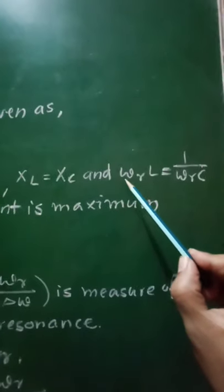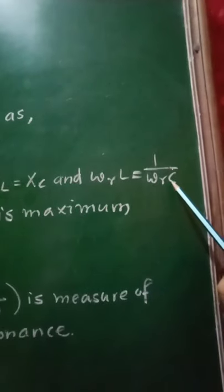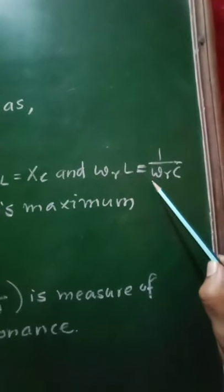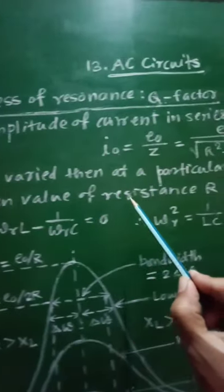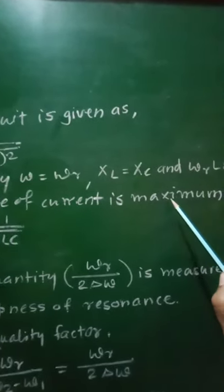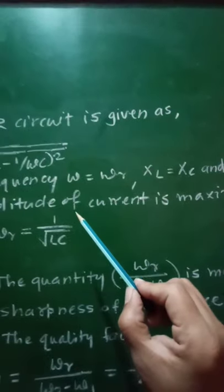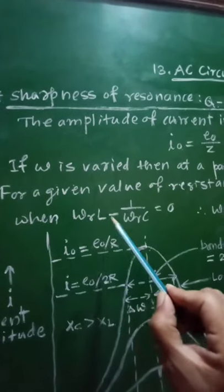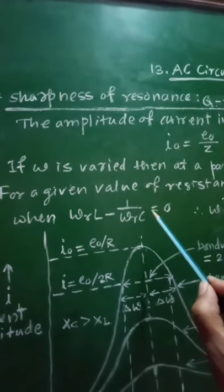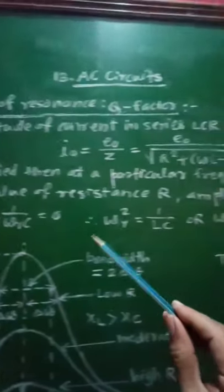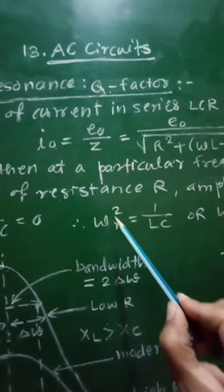At resonance, inductive reactance equals capacitive reactance, so we write ωᵣL = 1/(ωᵣC), since XL = ωᵣL and XC = 1/(ωᵣC). For a given value of resistance R, the amplitude of current is maximum when ωL − 1/(ωC) = 0, that is when this difference is zero.